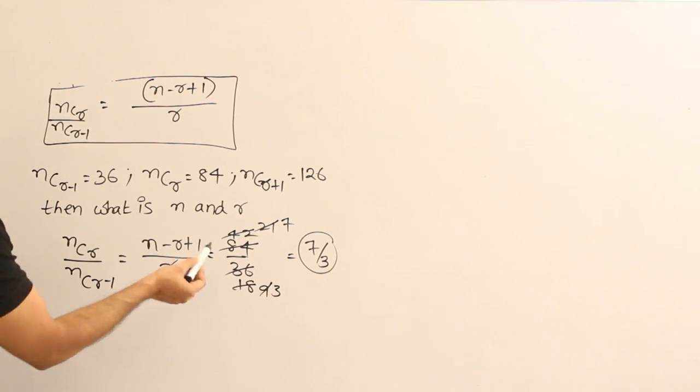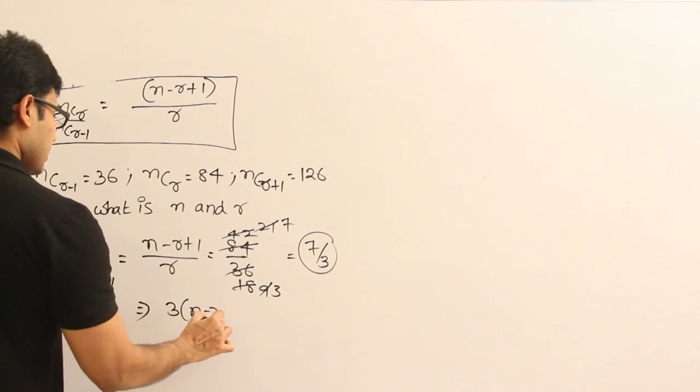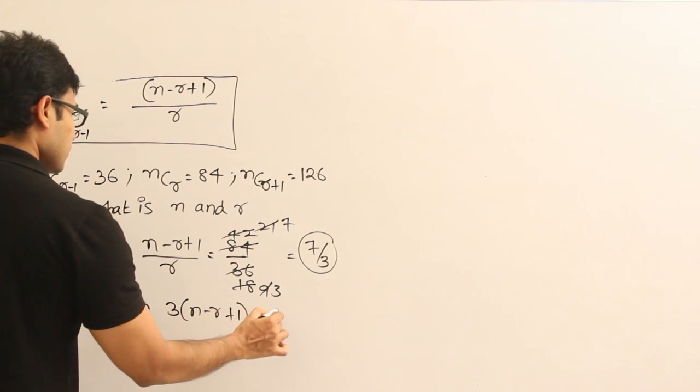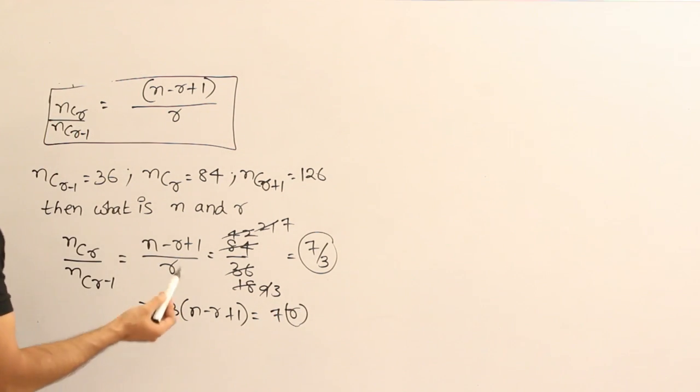So now you can cross multiply this and find it out. So what is it? 3 into (n-r+1) equal to 7 into r. You can just cross multiply it and you are going to get one equation like this. You can simplify this equation if you want. That is not my intention. I just wanted to show you.